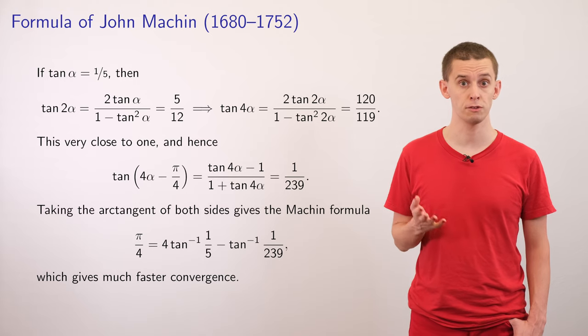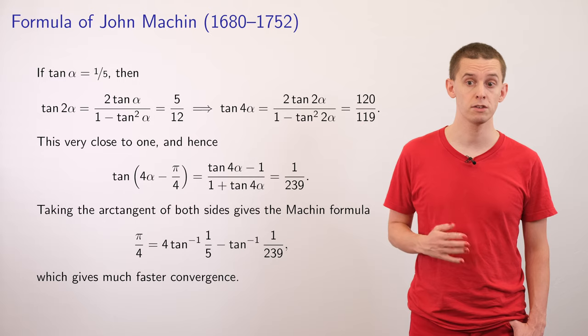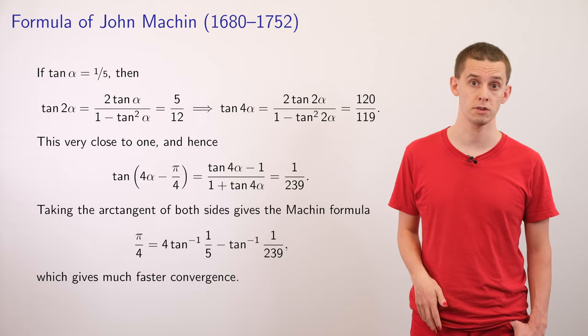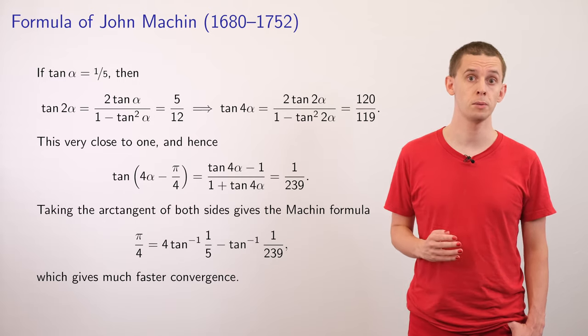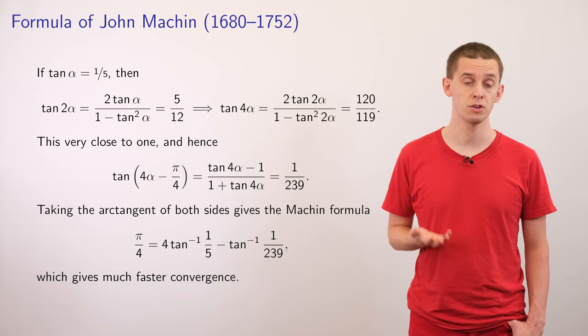And now if we take the arc tangent of both sides and rearrange, we find that pi over 4 is equal to 4 times the inverse tan of a fifth minus the inverse tan of 1 over 239.